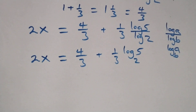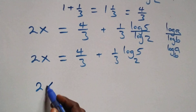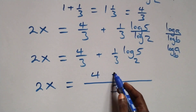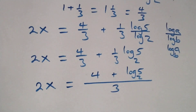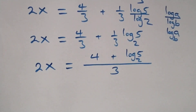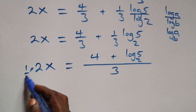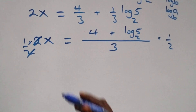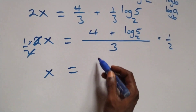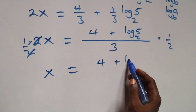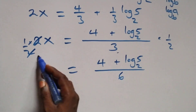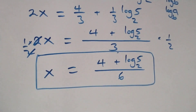We bring this together as a fraction with denominator 3: 2x equals (4 plus log 5 base 2) over 3. Then we multiply each side by 1 over 2 — the 2 cancels — and we have x equals (4 plus log 5 base 2) all over 6. That is the value of x. So x equals (4 plus log 5 base 2) over 6.